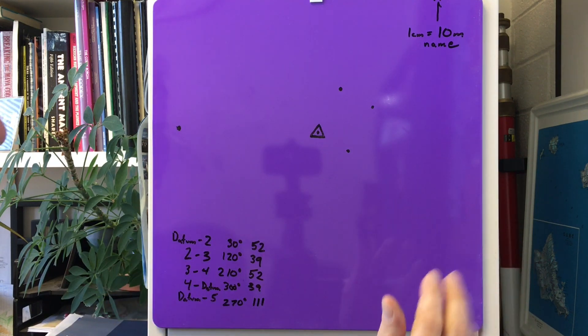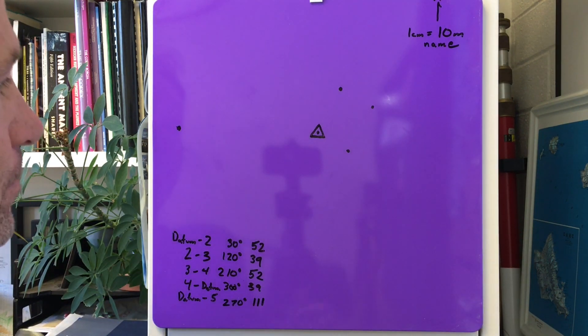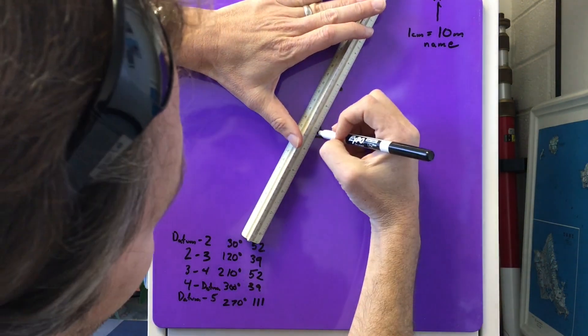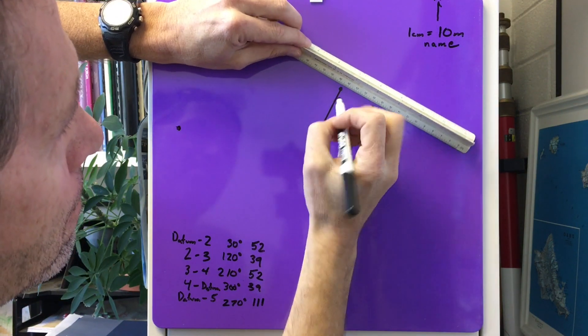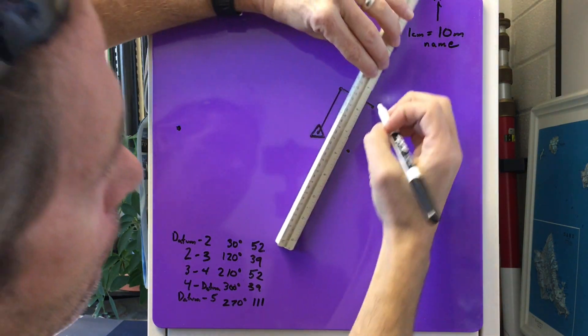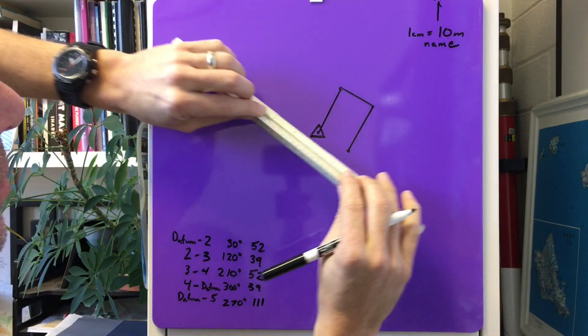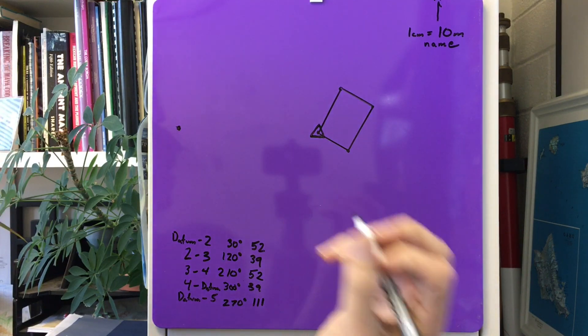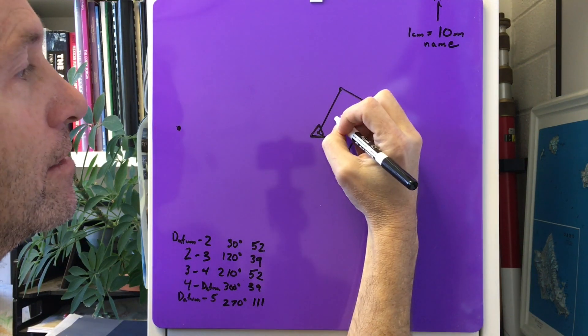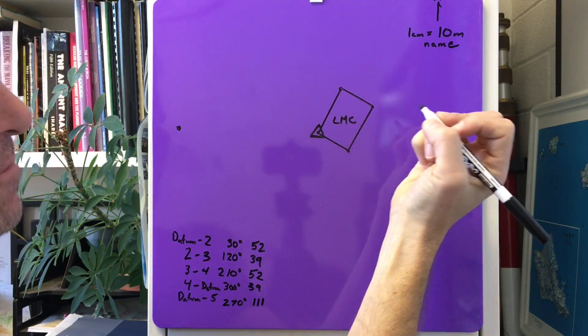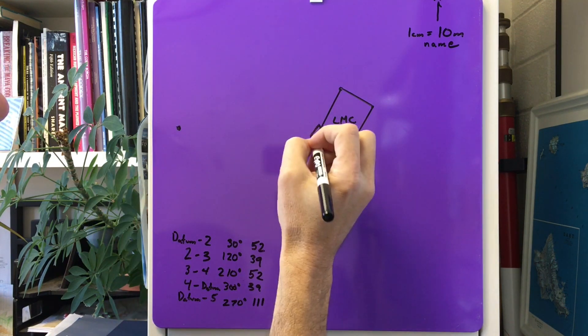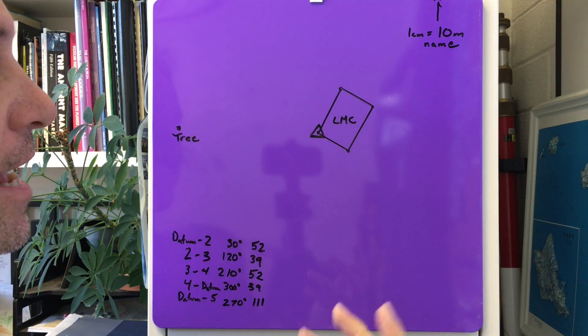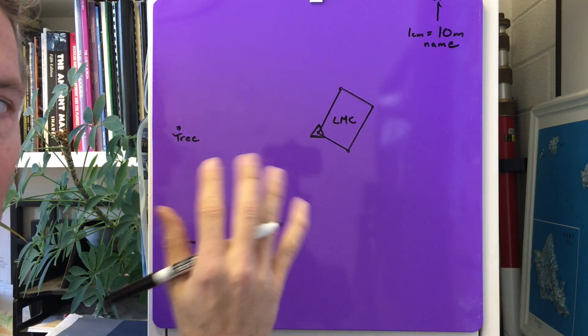Now I have all my points. What's left to do? You want to connect the dots with your ruler. Starting at the datum, I go connect, connect, connect, connect, and then connect. Then I'll label this building - we'll just say it's the LMC building. I'll label my final point - let's say we took a degree reading out to a tree. That's basically it, there you have it.